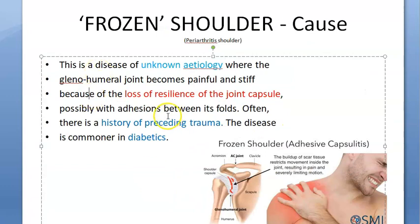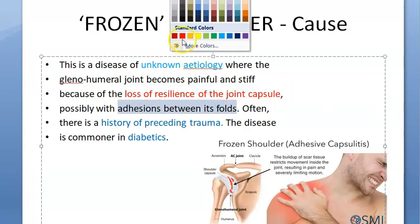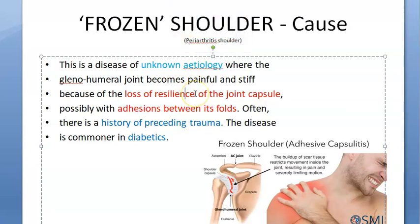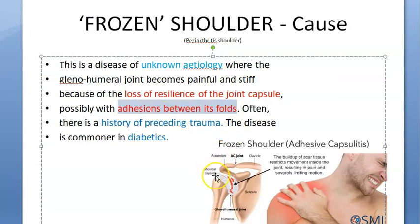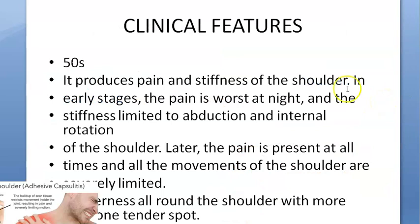Because of this injury and healing, there is loss of resilience of the joint capsule, and there is adhesion between its folds. This is the pathogenesis - because of the injury, degeneration and inflammation occur, causing loss of resilience of joint tissue and adhesion between the folds, leading to adhesive capsulitis or frozen shoulder.